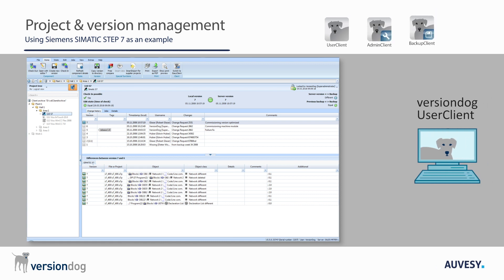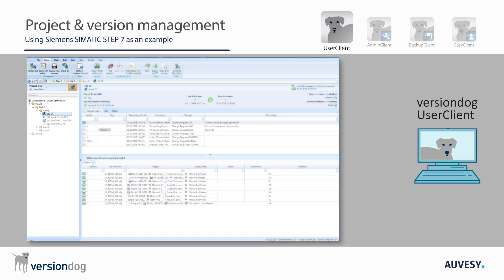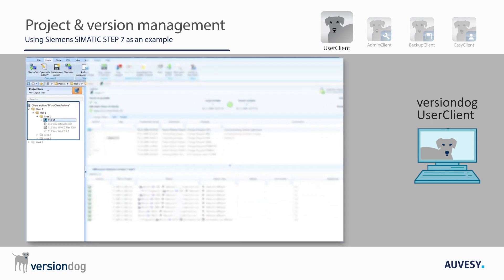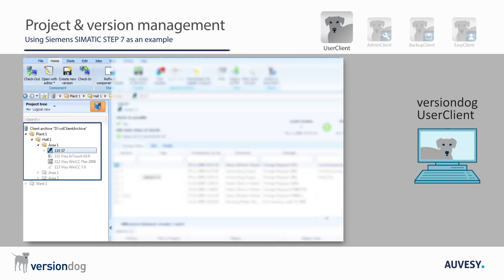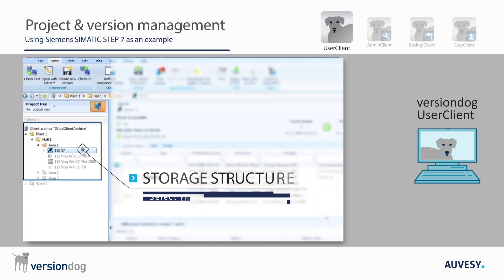The Version Dog user client greatly simplifies the process of making a change to a project and creating a new version. In the project tree on the left, you can see all the projects that were already checked into Version Dog. All components and directories that are not grayed out are present locally and available in the client archive. Grayed out components are only present on the server. New directories, components, and projects can be created directly in the project tree.